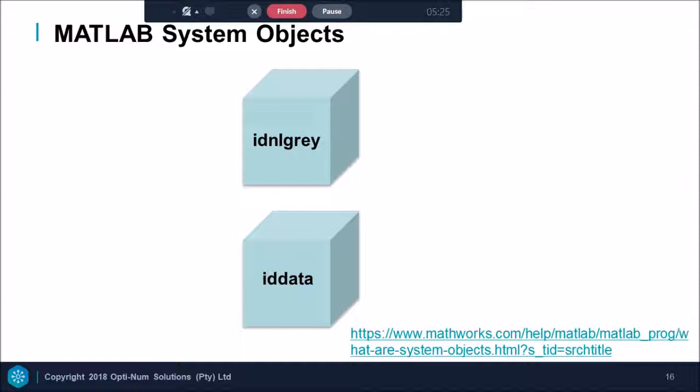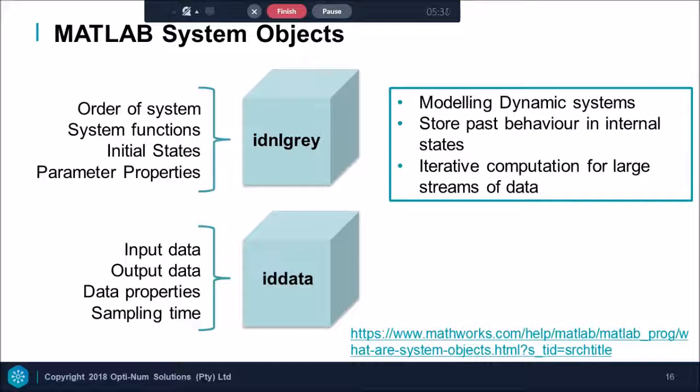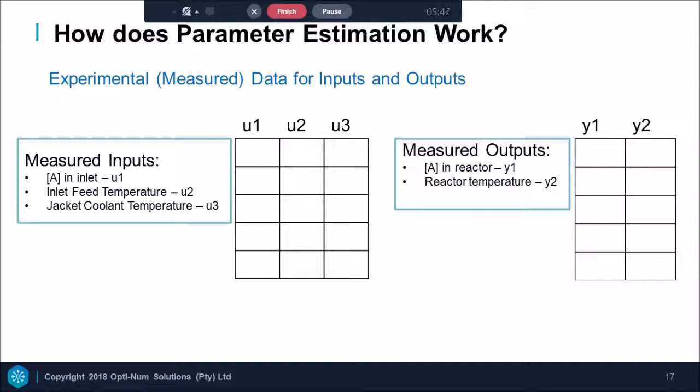System objects are designed specifically for implementing and simulating dynamic systems with inputs that change over time. Many signal processing, communications, and control systems are dynamic. In a dynamic system, the values of the output signals depend on both instantaneous values of the input signals and on the past behaviour of the system.